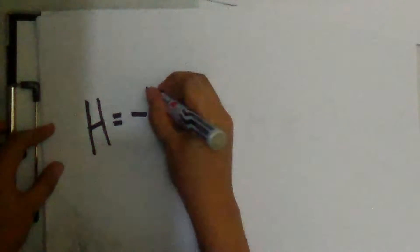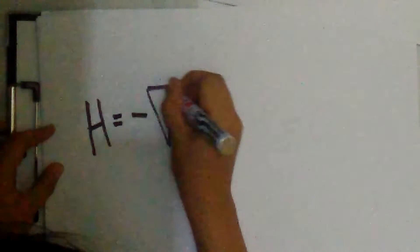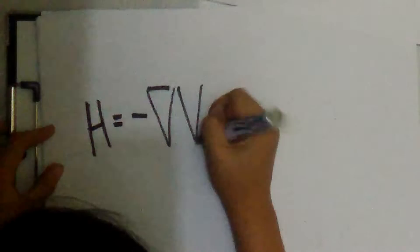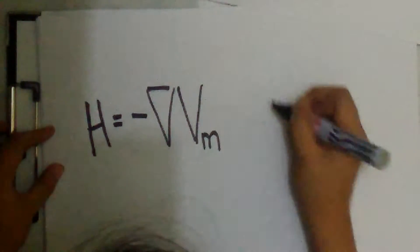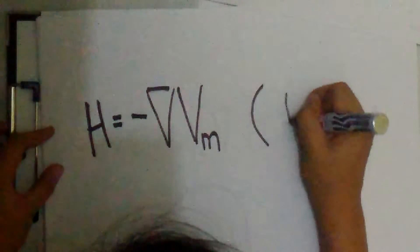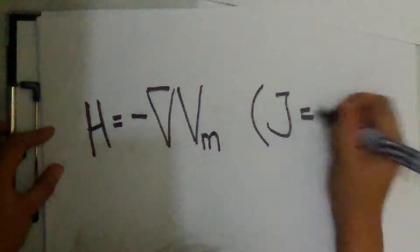We then have H is equal to negative gradient Vm, where J is equal to 0.